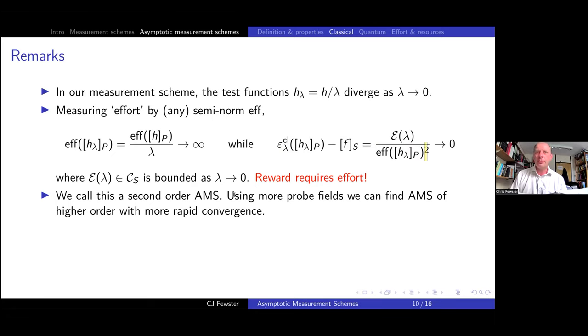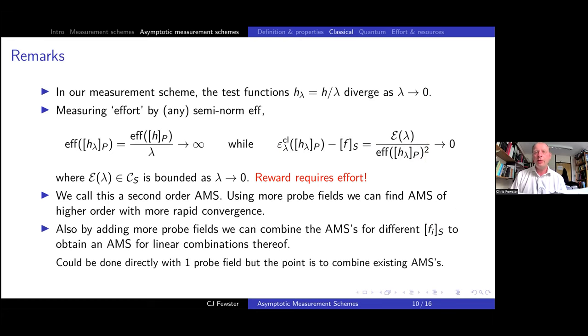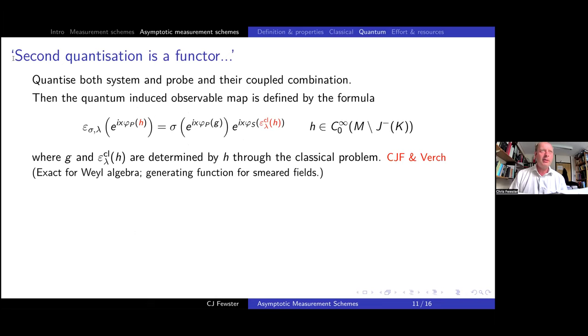Obviously the effort associated with this thing is going as one over lambda and therefore going to infinity as lambda goes to zero. Meanwhile, the difference between the classical observable we're inducing and where we want to be is actually equal to something bounded divided by the square of the effort. So what we discover is reward requires effort, probably something you were told by a teacher and disliked then. But it's true, unfortunately. Because we have the second power here, we call it a second order asymptotic measurement scheme. We can actually get asymptotic measurement schemes of higher order by throwing in more probe fields. And we can also use this same trick using more probe fields to form linear combinations of AMSs to find AMSs for linear combinations of our test functions.